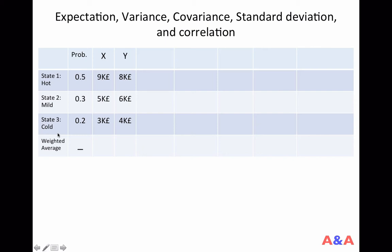If the summer is chilly, on the other hand, which happens with probability 0.2, the sales will be 3,000 pounds and 4,000 pounds respectively. So it's not very good.